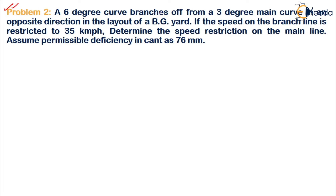It says a 6-degree curve branches off from a 3-degree main curve. So there is a main curve whose degree is 3, and there is a branch curve with degree 6, in the opposite direction, in the layout of a broad gauge yard. So the gauge given to us is broad gauge in this particular question.